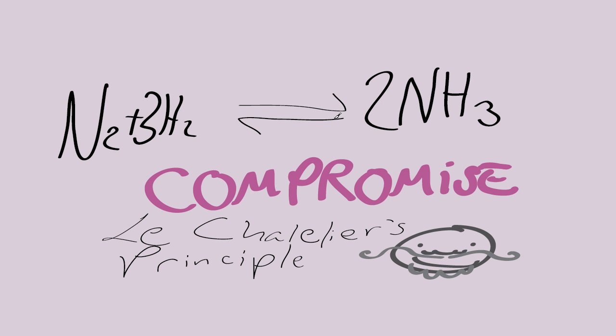The Haber process is another reaction that involves a dynamic equilibrium. This reaction produces ammonia from nitrogen and hydrogen. Now, the conditions that favour high yield of ammonia are high pressure because there's less moles of gas on this side.